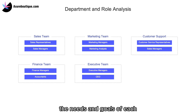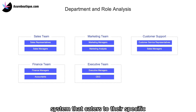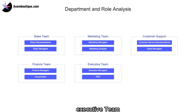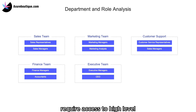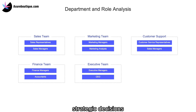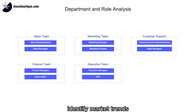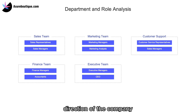By understanding the needs and goals of each department and employee, we can design a CRM system that caters to their specific requirements while aligning with the overall business objectives. Executive team — Executive managers play a crucial role in the adoption and utilization of a CRM system. They require access to high-level insights and analytics to make informed strategic decisions, such as identifying market trends, evaluating the performance of different business units, and determining the overall direction of the company.